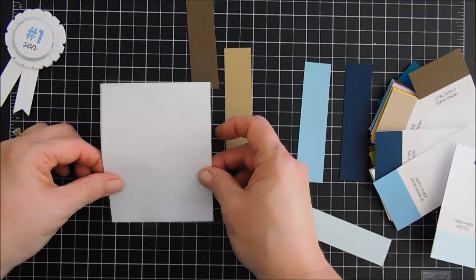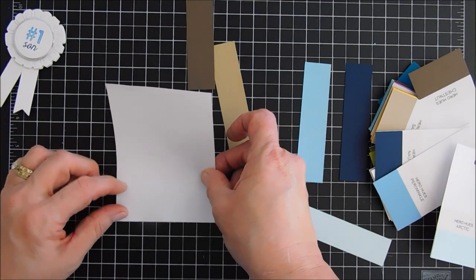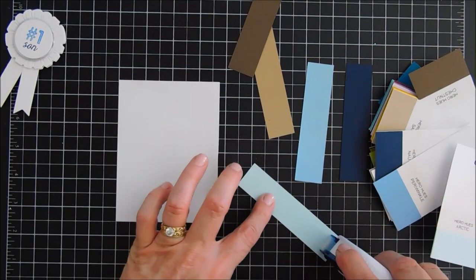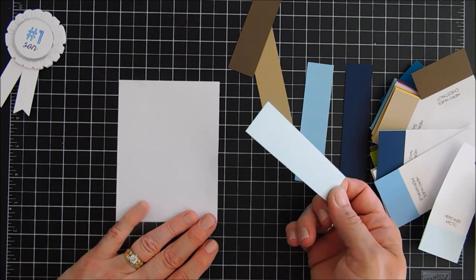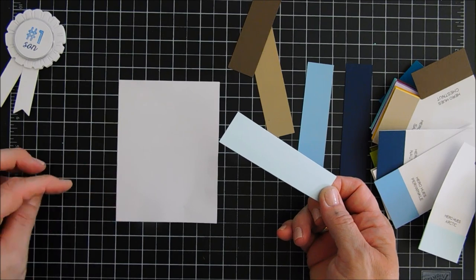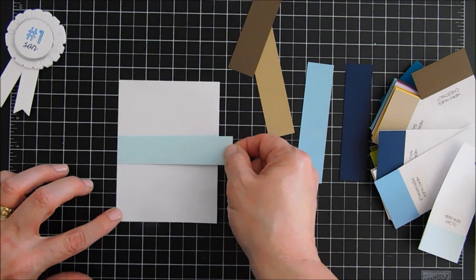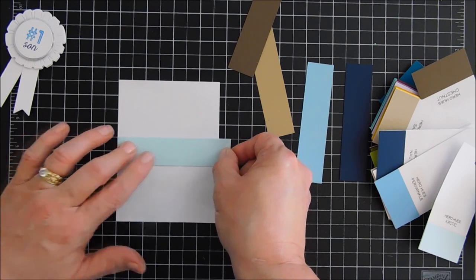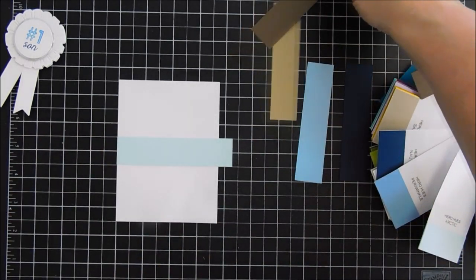Sorry, I'm getting my Hero Hues and my Spellbinders cardstock mixed up. This is Arctic. And if you guys haven't tried Hero Arts cardstock, I think you will be very impressed. The weight of it is fabulous for not just die cutting but for card bases too.